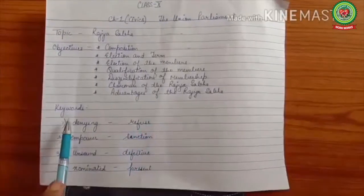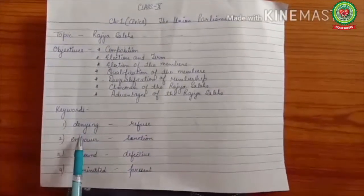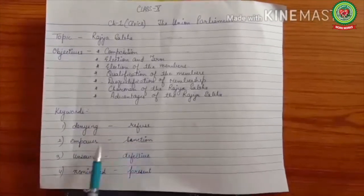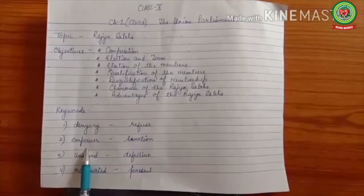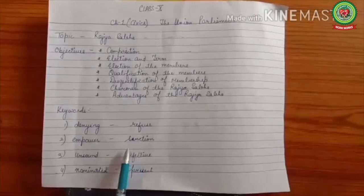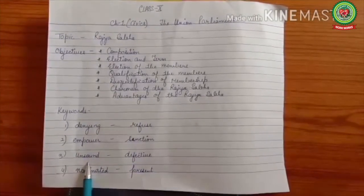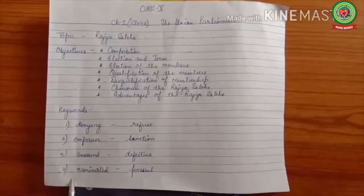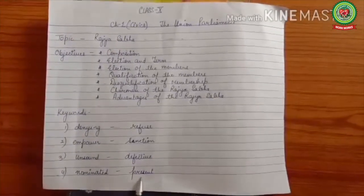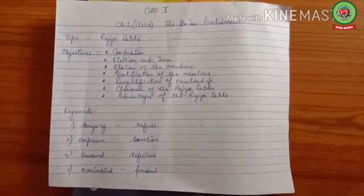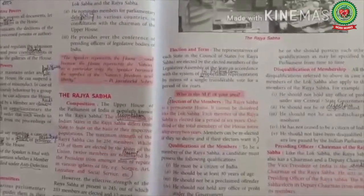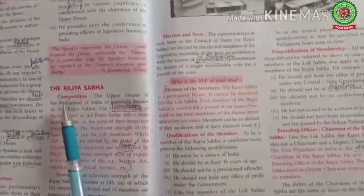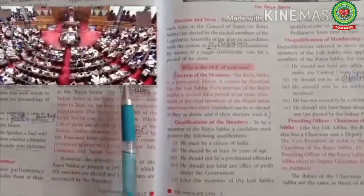Let's discuss some keywords. Number one: 'denying' — it means refuse. Number two: 'empower' — it means sanction. Number three: 'unsound' — it means defective. Number four: 'nominated' — it means present. Now open your books to the topic: The Rajya Sabha — Composition.